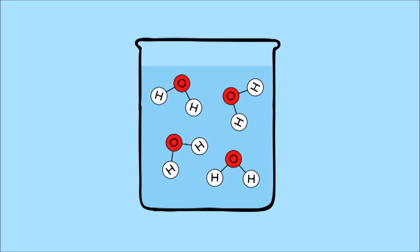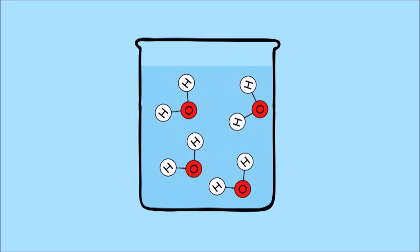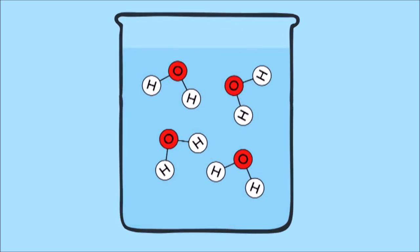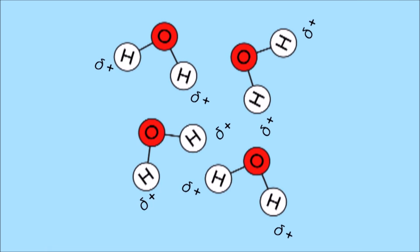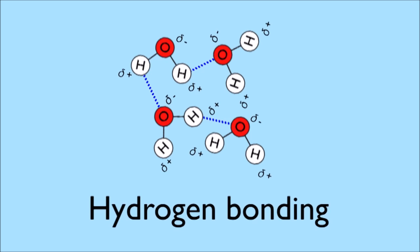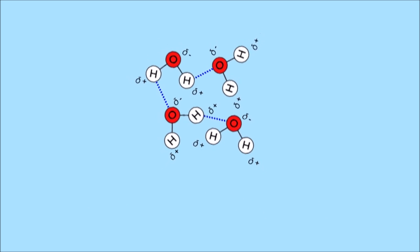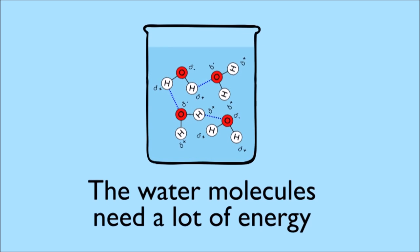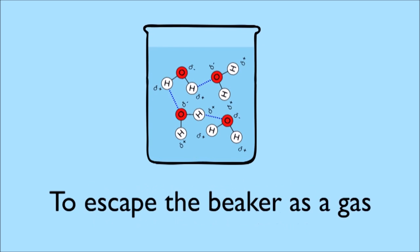Imagine a bunch of water molecules in a beaker. They are in liquid form, so can move around each other. But the delta-positive hydrogens from one molecule are weakly attracted to the delta-negative oxygen of another. This is a type of intermolecular force and it has a special name, hydrogen bonding. Because of this, the water molecules need quite a bit of energy to overcome the hydrogen bonds and escape from the beaker as a gas.